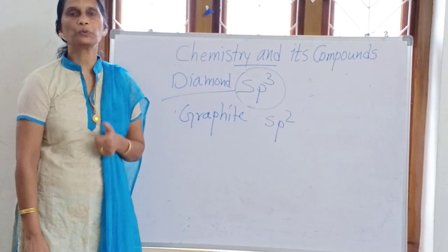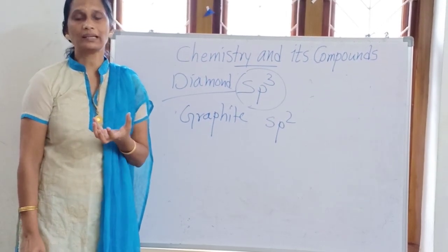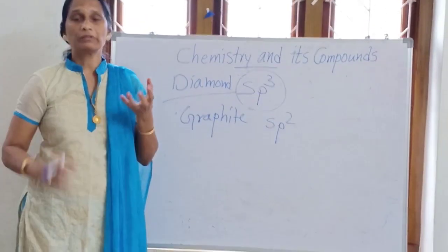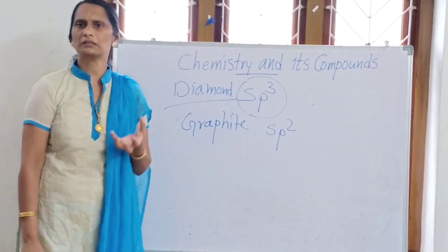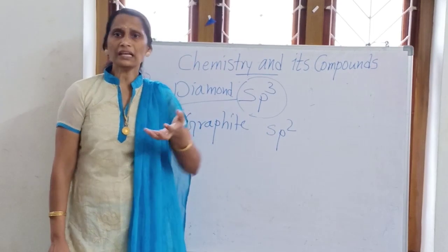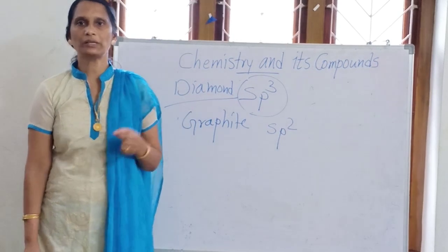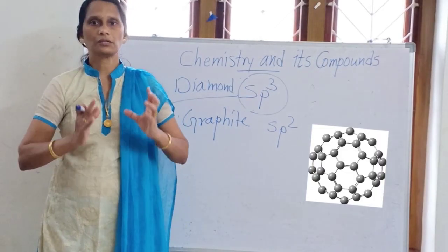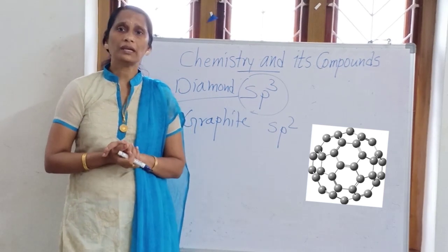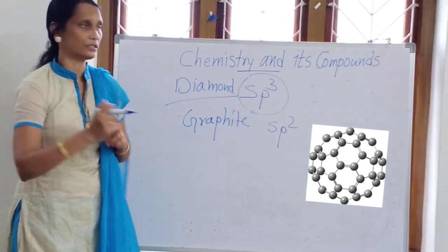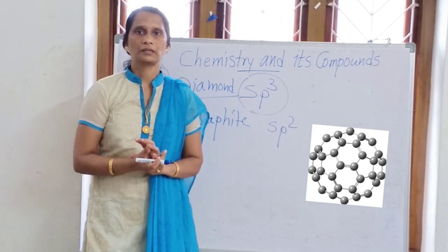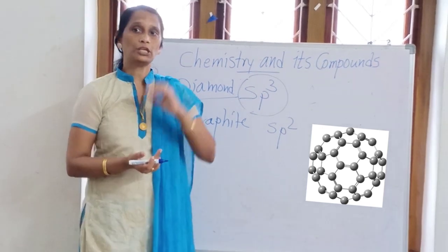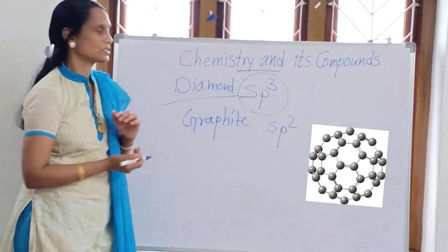Richard Buckminster proved that any spherical structure composed of triangles will have a lot of strength — nothing can affect such a structure. Taking this into consideration, a group of scientists — Smalley, Robert and Harold — planned to arrange carbon atoms into a spherical structure. They succeeded in arranging 60 carbon atoms into a ball-shaped structure with the shape of a soccer ball, having 12 pentagonal faces and 20 hexagonal faces. They named it after Richard Buckminster — Buckminster Fullerene.